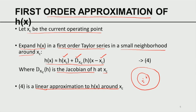H of X is defined globally, but we have replaced the global H of X by a local linear approximation using a first order Taylor series in a small neighborhood around the current operating point. Instead of solving the problem globally, we are going to solve the problem locally and keep making local improvements with the hope that these local solutions and improvements will ultimately lead to the global solution. We have converted a nonlinear problem to an associated linear problem by invoking the first order Taylor series using the Jacobian.